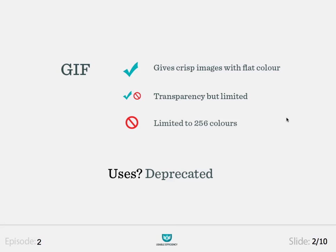Let's look at the three different image formats on the web, starting with GIF. The benefit of GIFs is that they give very crisp images with flat colours, for instance logos or icon type imagery. A GIF also supplies transparency, but as we will see it is very limited transparency. The main downside to GIFs is that they are limited to 256 colours.